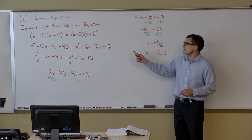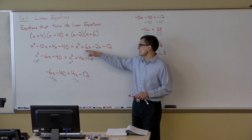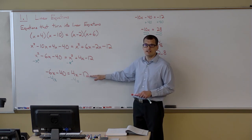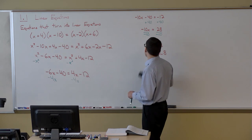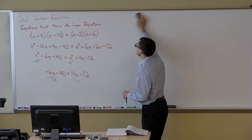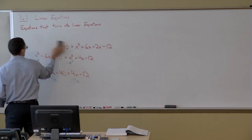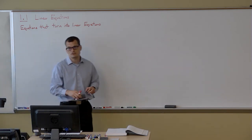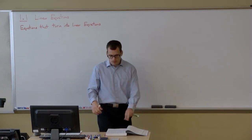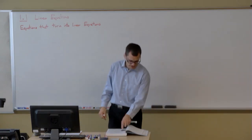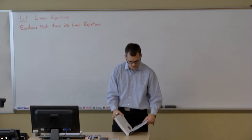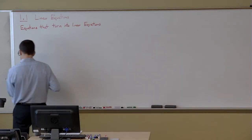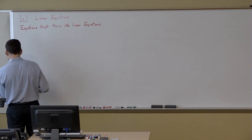We saw how sometimes equations that don't start out looking linear can be simplified to equations that are linear. That is the same thing with rational equations. We can start out with rational equations that, in the process of simplifying, turn into linear equations. Some of these are going to be long and ugly, others not so long, not so ugly.